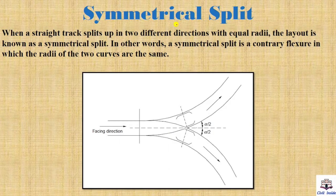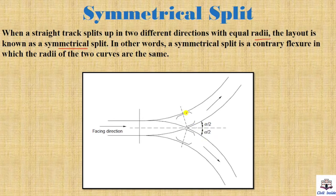Next is the symmetrical split. When a straight track is split up into two different directions with equal radius, the layout is known as a symmetrical split. The main track is split at equal radius, at angles of alpha by 2 on each side. In other words, a symmetrical split is a contrary flexor in which the radius of the two curves are the same.